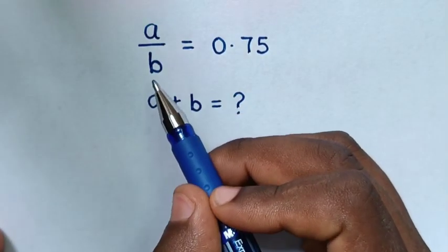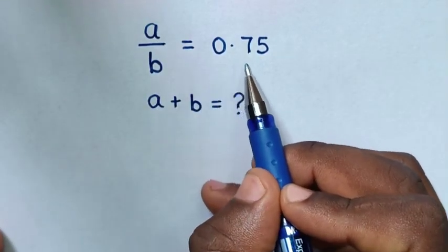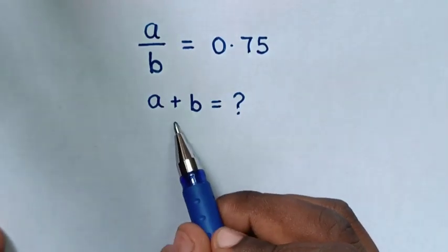Hello, how to solve A over B is equal to 0.75 to find the value of A plus B.